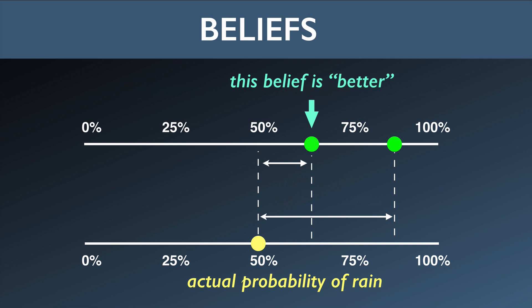In some cases degrees of belief and objective probabilities can be quantified and compared, and in many cases they can't. But the general notion of belief coming in degrees and of comparing our subjective degrees of belief against our knowledge of the states of affairs in the world that those beliefs represent — that is still a very powerful and useful tool.